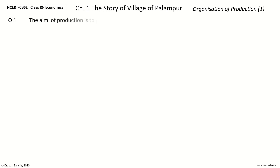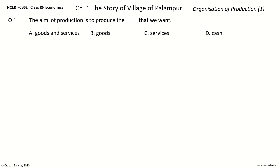Welcome to NCERT-CBSE Class 9 Economics Chapter 1, The Story of Village of Palampur. In this video, we will learn every point in the section Organization of Production. Question 1: The aim of production is to produce the dash that we want. The options are: goods and services, goods, services, or cash. The answer is goods and services. So, the aim of production is to produce the goods and services that we want.